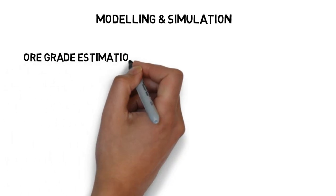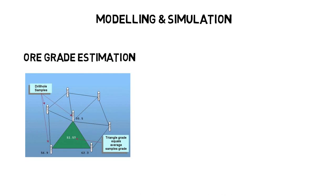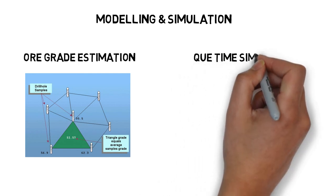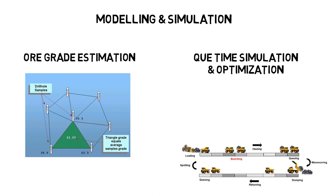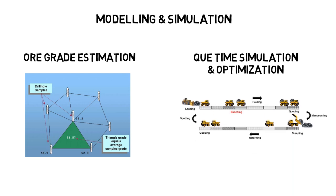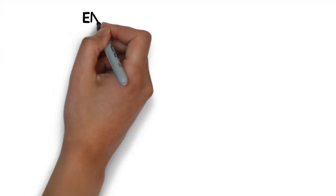Another course you'll need to take is the Modeling and Simulation class. Here you'll mainly look at methods of estimating ore grades using drill hole data, and simulating queue times for a mining operation to understand how to optimize a production fleet. There's some statistics involved from your second year class, but it wasn't too difficult, and it's an interesting class, especially if you're into optimization problems.